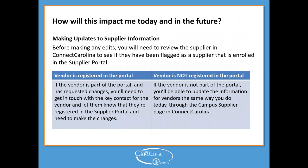How will all of this impact you as a UNC CH employee? At this time no specific action is required on your part unless a supplier requests you to make changes to their banking or address information. Before making any edits you will need to review the supplier in Connect Carolina to see if they have been flagged as enrolled in the supplier portal. If the vendor is part of the portal and has requested changes, you will need to get in touch with the key contact for that supplier and let them know they need to make those changes themselves. If the vendor is not part of the portal, you will be able to update the information the same way you do today through the campus supplier page in Connect Carolina.